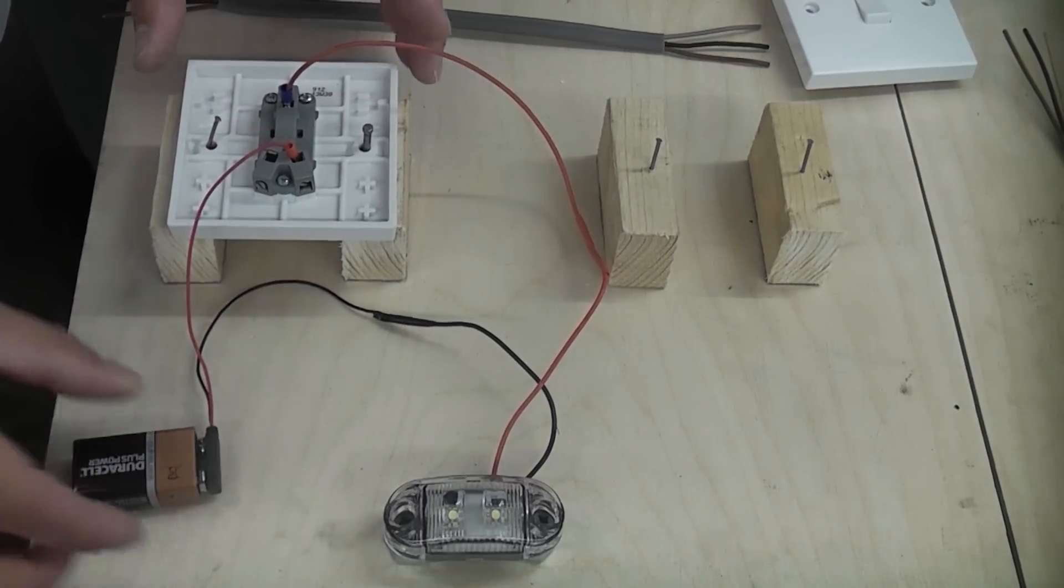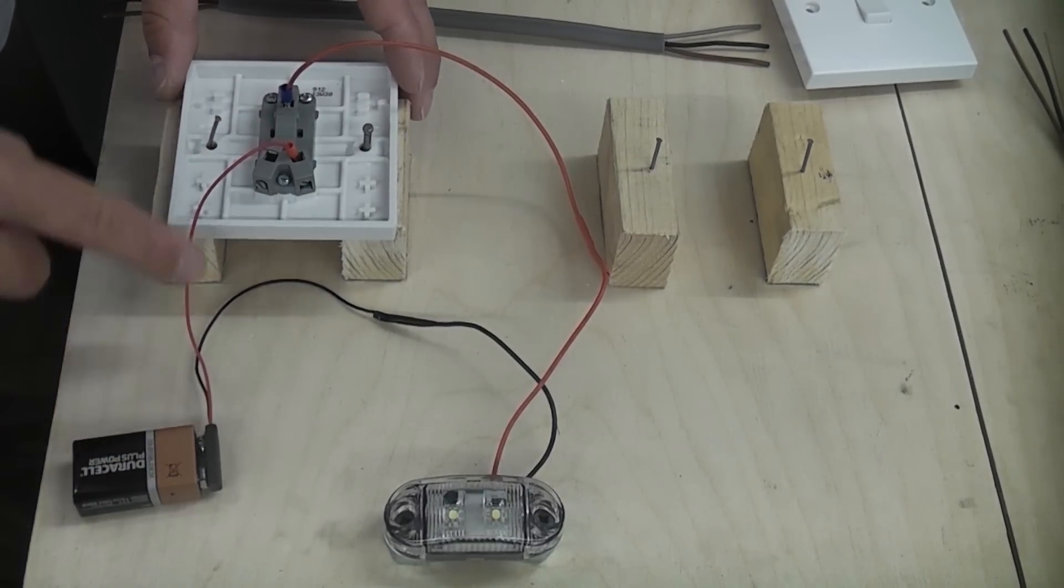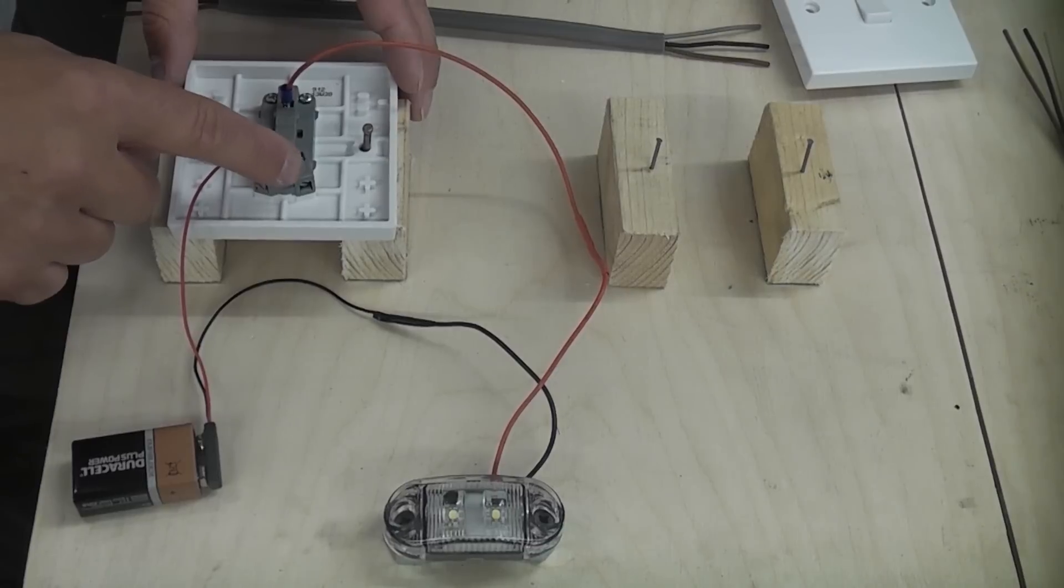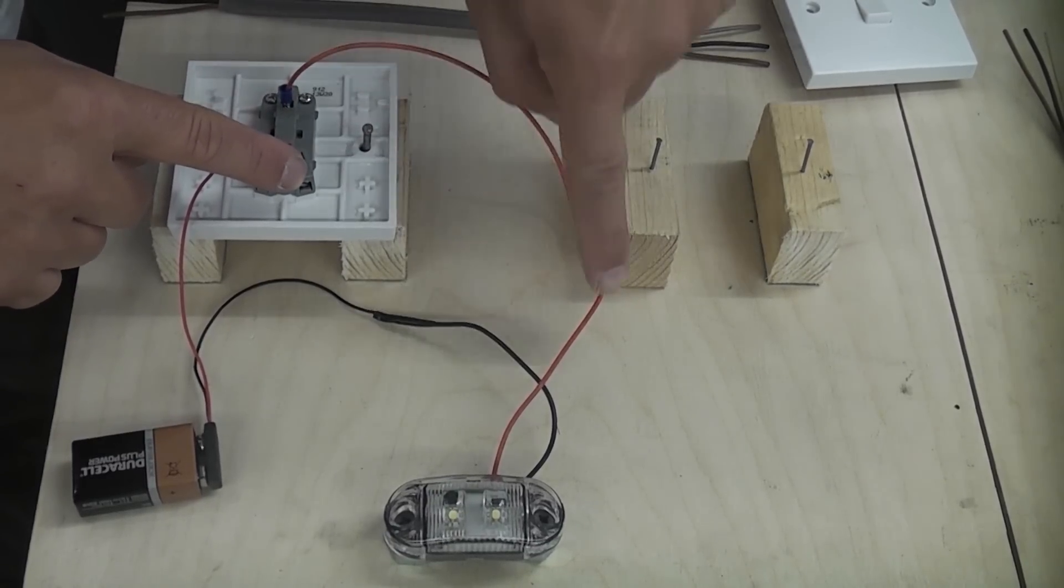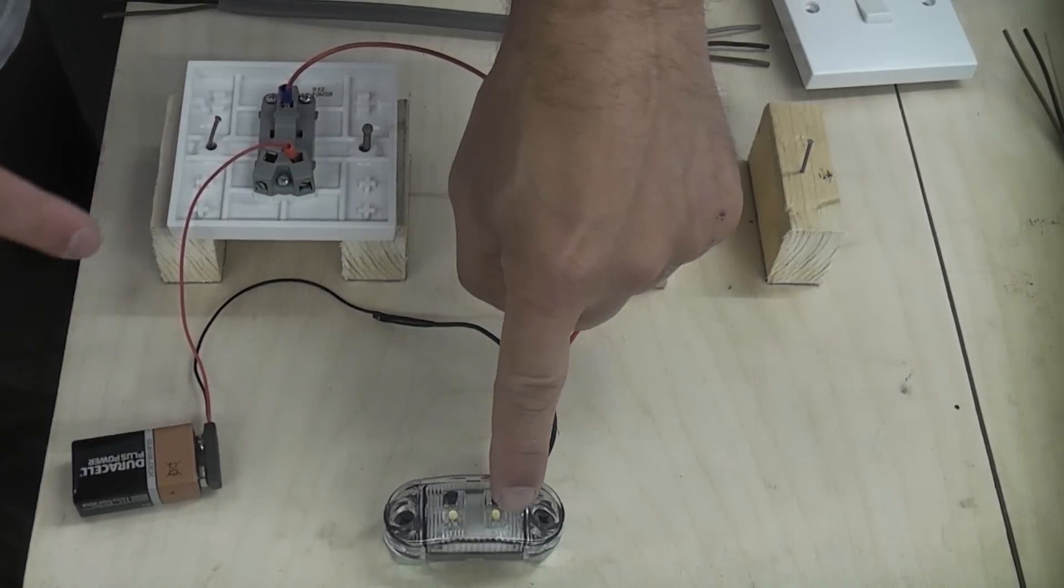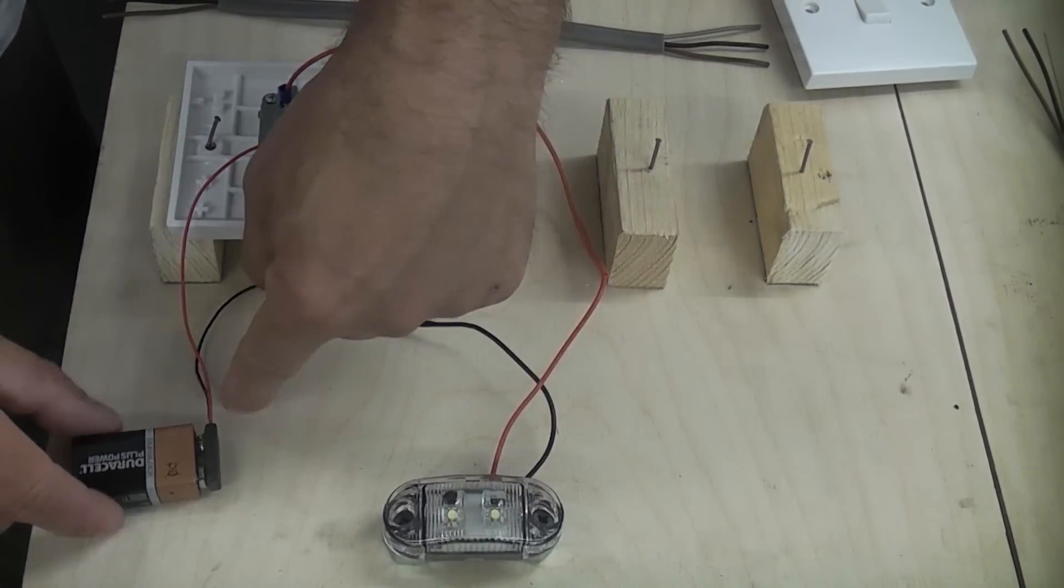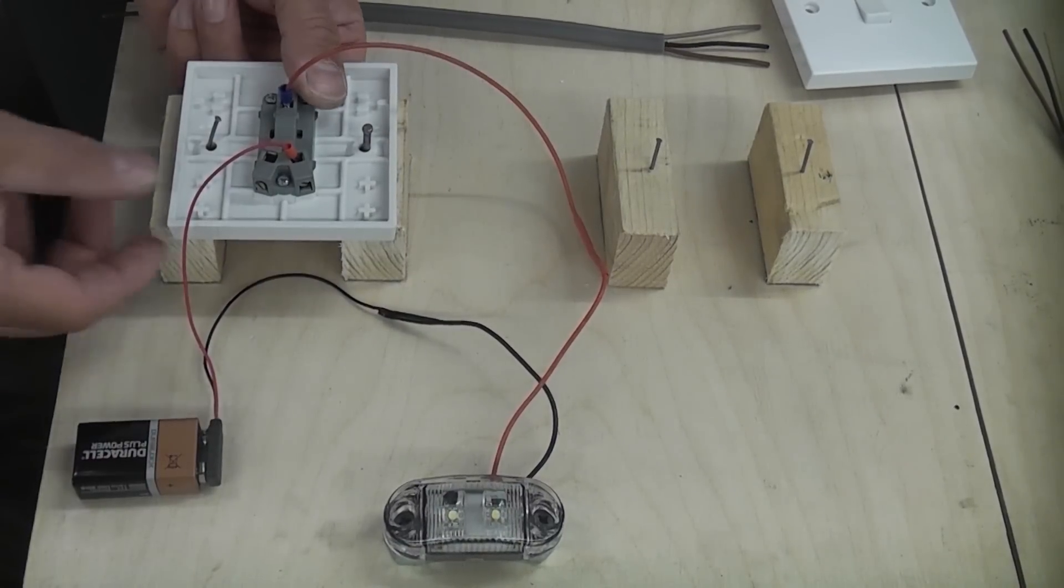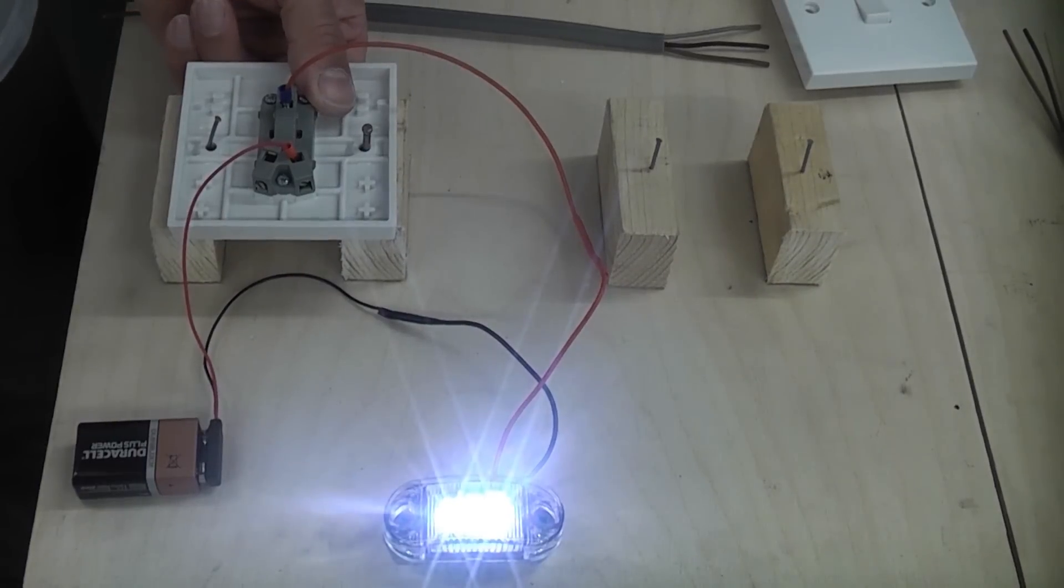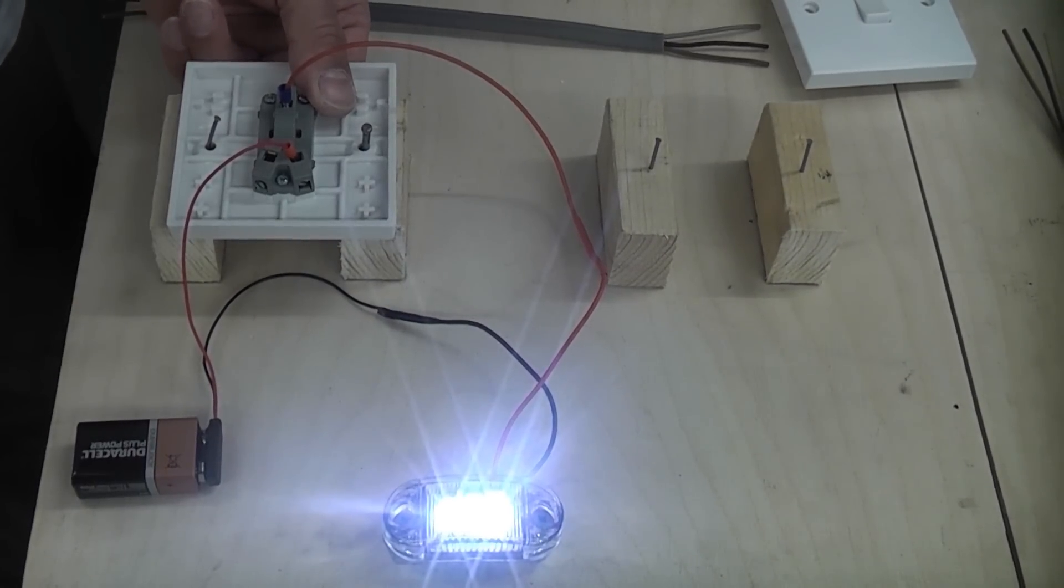So that is our consumer unit or our battery. We have the positive supply that is going into L1. That then comes out of the top of the comm and goes to the lamp. The negative then goes from the lamp back to the power supply which in this case is the battery. When you flick the switch it creates the circuit and the light comes on.